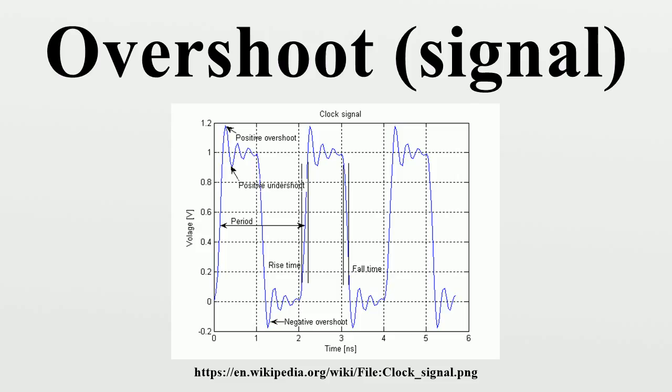In the approximation of functions, overshoot is one term describing quality of approximation. When a function such as a square wave is represented by a summation of terms, for example,